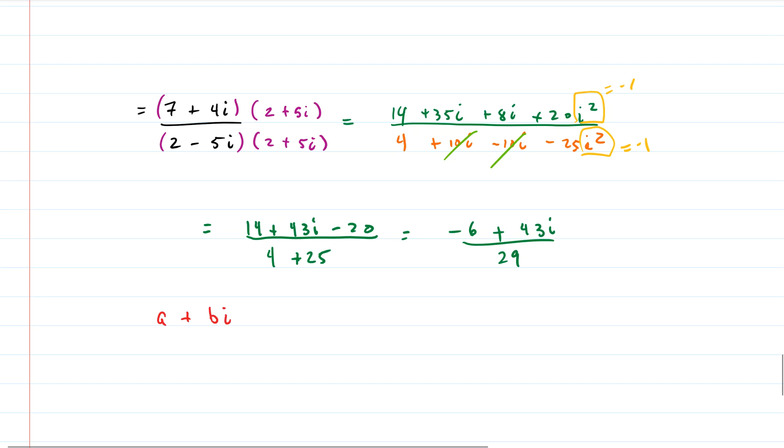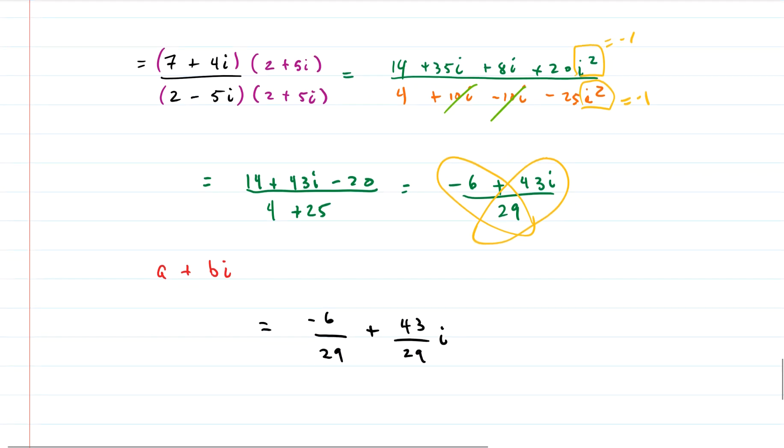So our real part and our imaginary part have to be separate. So we need to separate these two items. So what we're going to do is we're going to take these and make two different fractions. So we get negative 6 divided by 29. And then we have plus 43 divided by 29 times i.